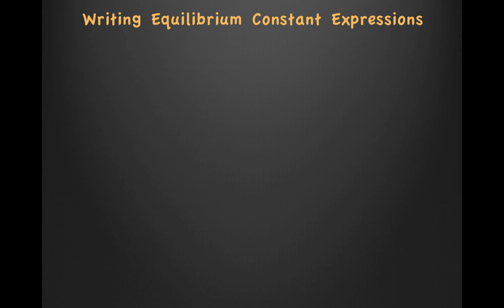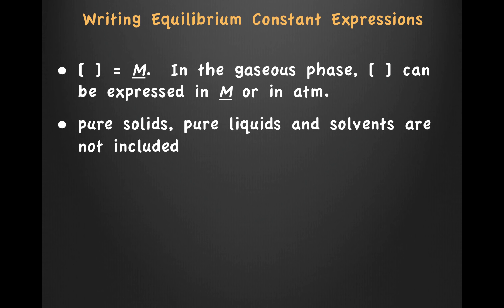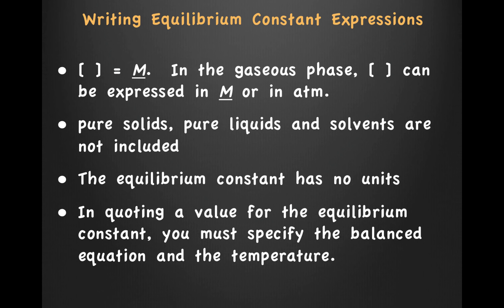Concentration is measured in molarity. In the gaseous phase, concentration can either be expressed in molarity or in atmospheres. Pure solids, pure liquids, and solvents are not included — when we write the equilibrium expression, we never include solids or liquids; we just ignore them, as they are equal to 1. The equilibrium constant has no units. And lastly, in quoting a value for the equilibrium constant, you must specify the balanced equation and the temperature. Remember, there's only one thing that will change an equilibrium constant, and that's temperature.